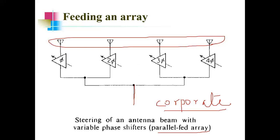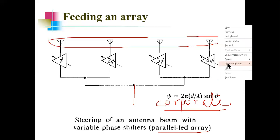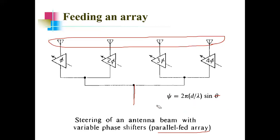The phase shift at each element is φ = 2πd/λ sin θ. The power is equally divided among all elements. If the loss at each element is L_PS, then the entire loss in the parallel feed network is also L_PS, because it is parallelly fed — the loss does not get multiplied. That is one important fact about parallelly fed arrays.